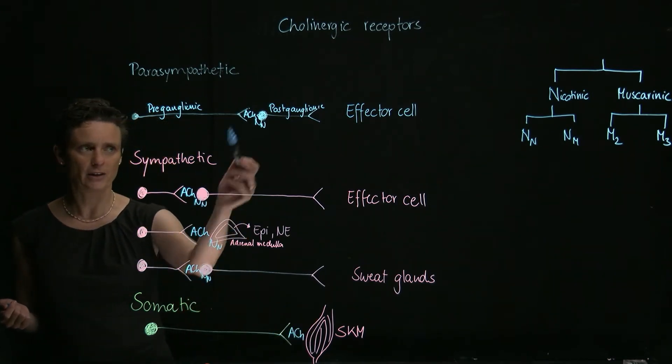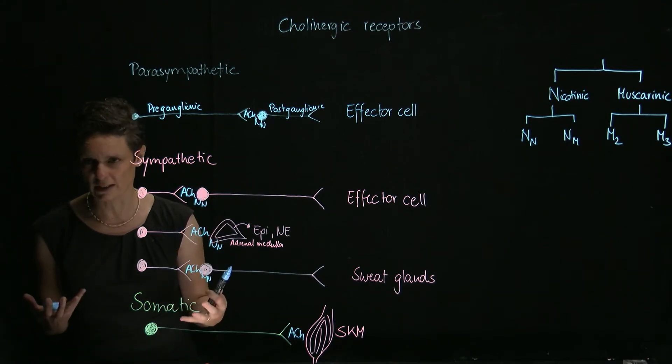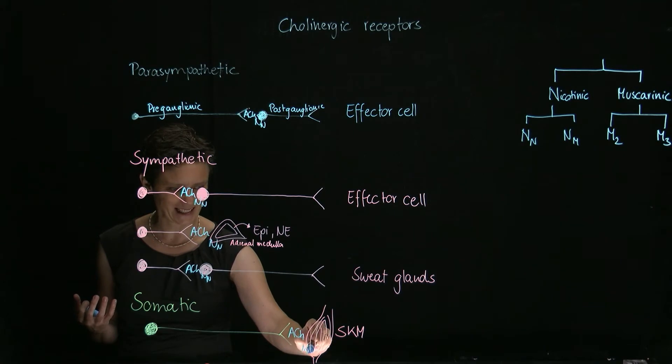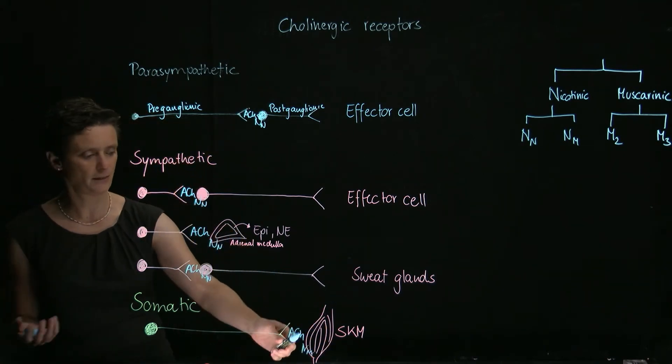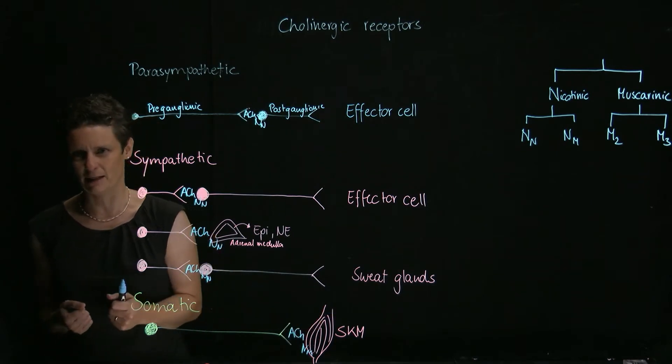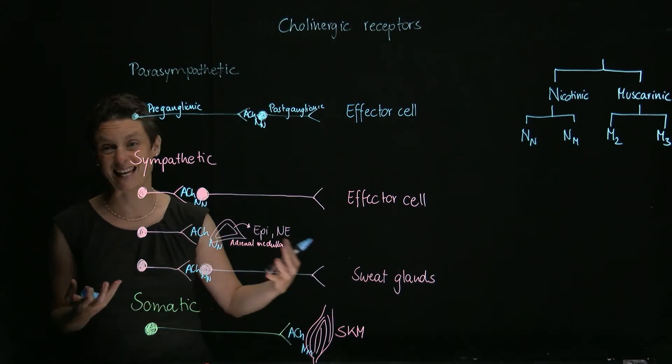And then these were all places for the neuronal nicotinic, and now we have the NM receptor on the skeletal muscle, because the M stands for muscle. So we find them in the somatic nervous system on the skeletal muscle. This is the NN and NM subtype.